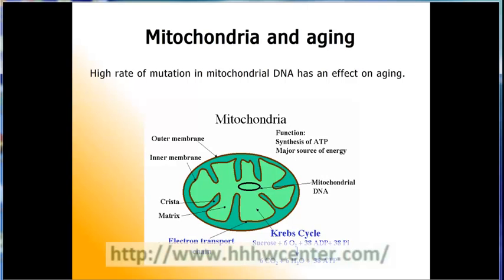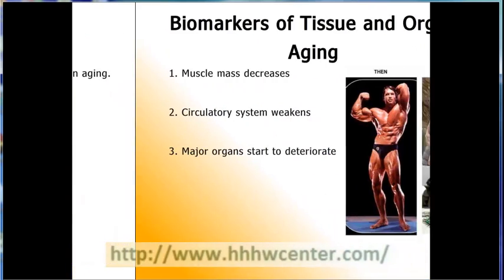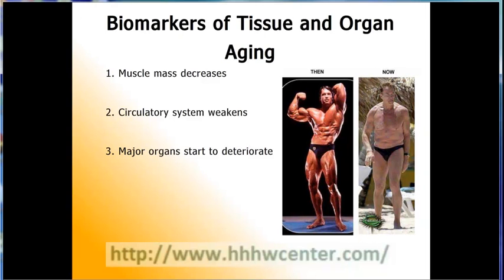While new longevity genes, or geronogenes, are being discovered at an amazingly rapid rate, until the time that gene therapies are available to alter your genes for the better, it may not be that important or comforting to know what types of genes you inherited. Biomarkers of tissue and organ aging: different tissues and organs change over time at varying rates, so enhancing their function will likely slow your rate of biological aging and in some cases even reverse it.